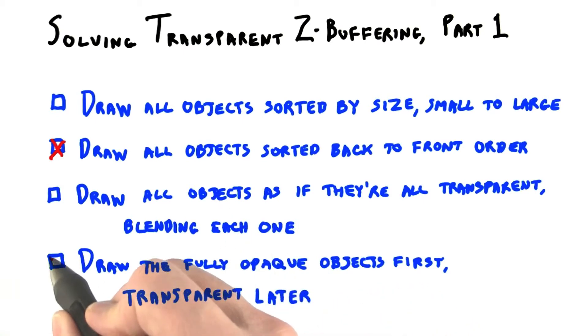The fourth answer works for this case, where there's only one transparent object. First, all the opaque objects are drawn. There's only one. It is then guaranteed that the transparent object will be able to blend with these opaque objects as needed.